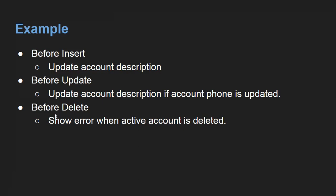The third scenario is before delete. The requirement is to show an error when an active account is deleted. On the account object, there is a picklist field called 'Active' with two values: Yes and No. If the active field is set to Yes, we need to show an error like 'you cannot delete the account.' Otherwise, the account can be deleted.